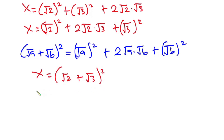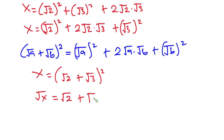Now let's take the square root on both sides. Square root of x equals square root of (√2 + √3)², and the square root cancels the square, so we have √x = √2 + √3.